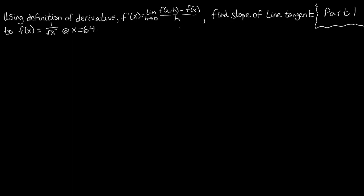The first thing we're going to do is find the slope of the line tangent to our function at our point, which we will do by using the definition of the derivative — the limit as h approaches 0 of f of x plus h minus f of x over h. By using this limit, we're going to find the derivative of f of x if we plug in 64 for our x value.